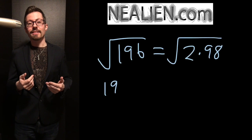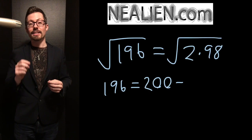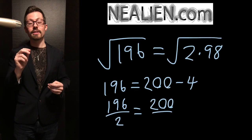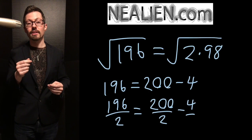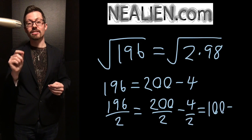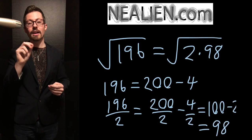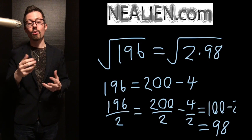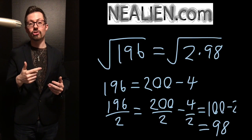One trick to doing that is to think about 196 as being 200 minus 4. So 200 divided by 2 is 100, minus 4 divided by 2 is minus 2. So 100 plus minus 2 is 98. Therefore, 196 divided by 2 is 98.